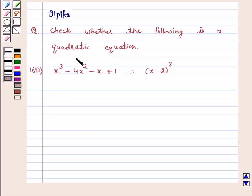Check whether the following is a quadratic equation: x cubed minus 4x squared minus x plus 1 equals x minus 2 whole cube.